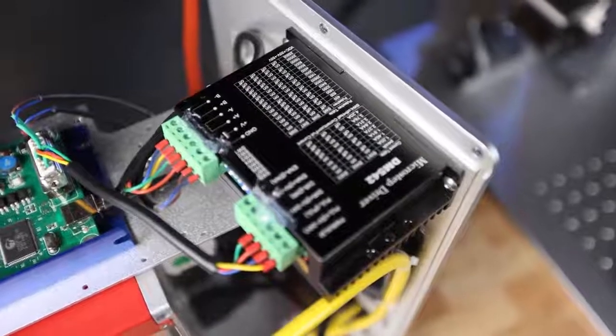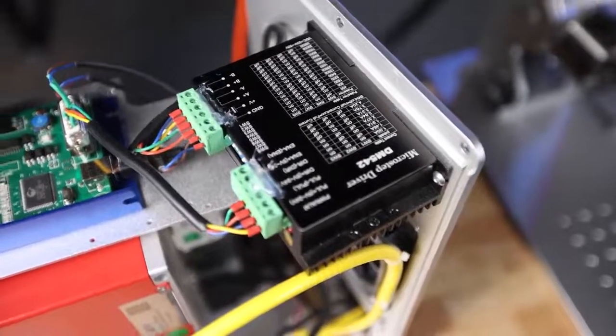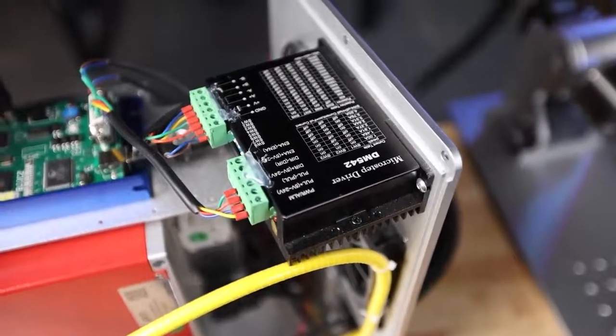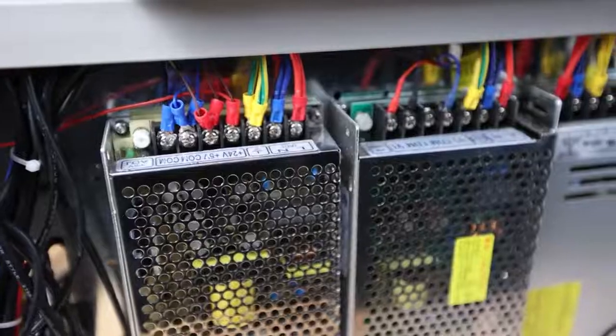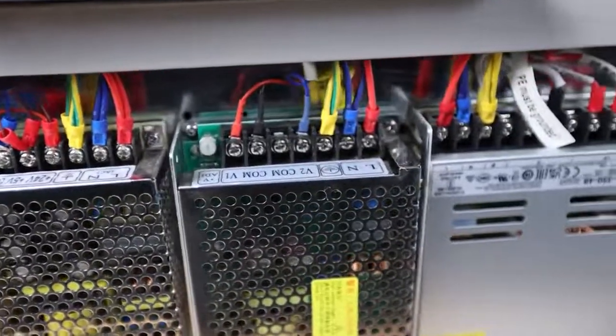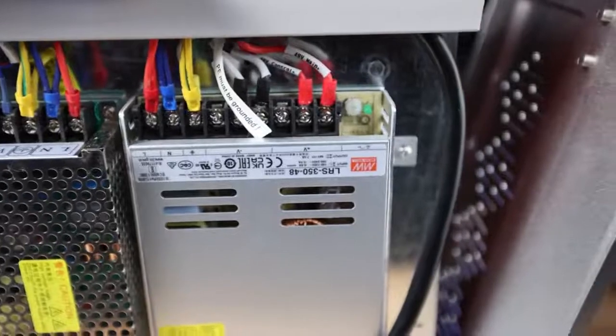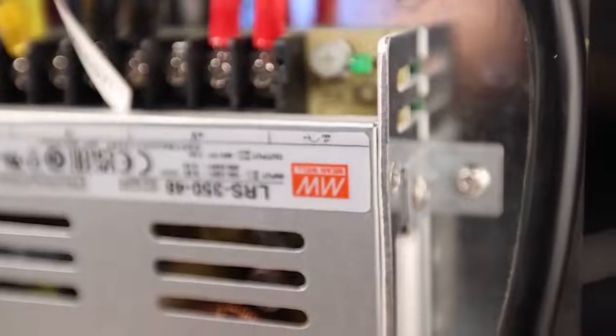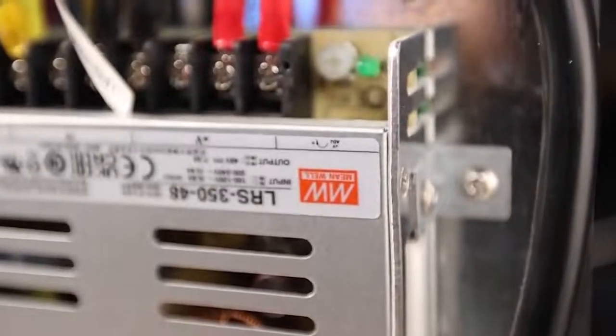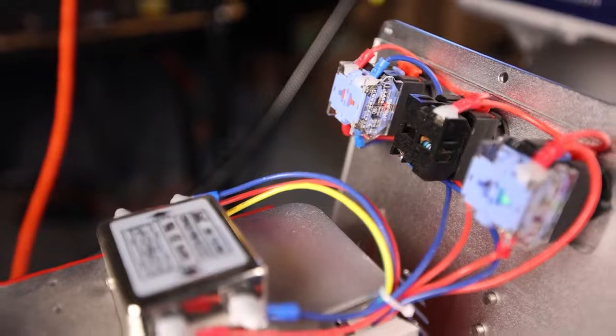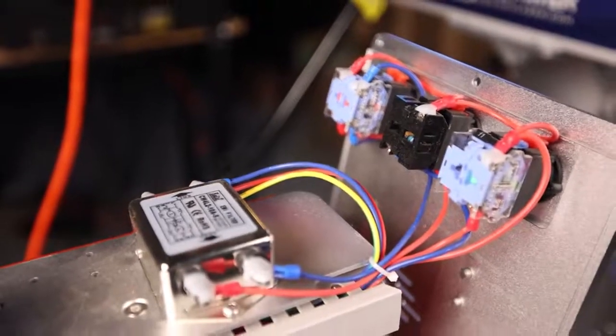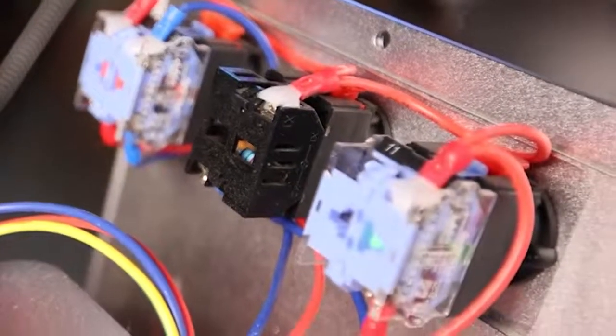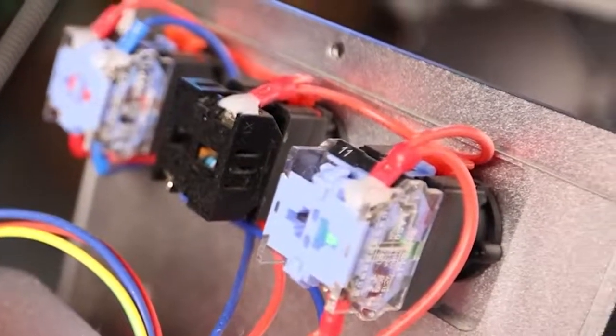This machine also comes with the standard DM542 stepper driver for your rotary axis. Like the Snowit stepper motor, this driver is extremely popular and known for its quality. I'm equally impressed with the power supplies that came with the unit. The unit supplying power to the laser source is a genuine meanwhile LRS 350-48, which instills a ton of confidence that my expensive laser source is safe. The system also features an EMI filter to make sure we're delivering clean power to the power supplies, and the relays that are operated by the front plate switches are beefy and solid.